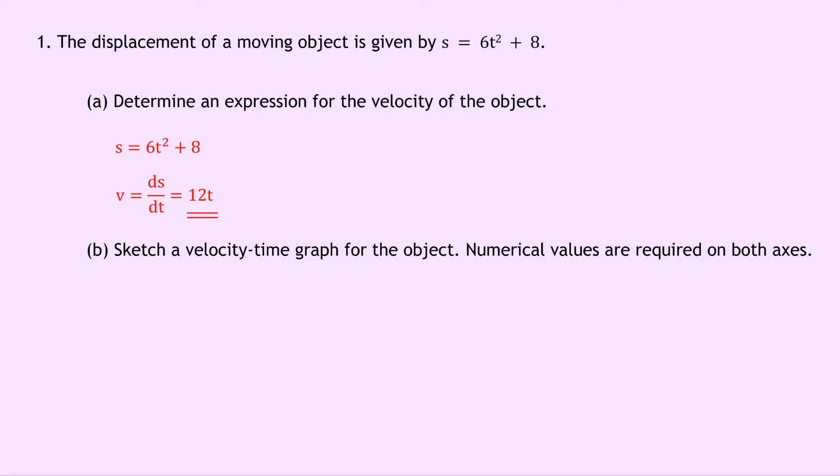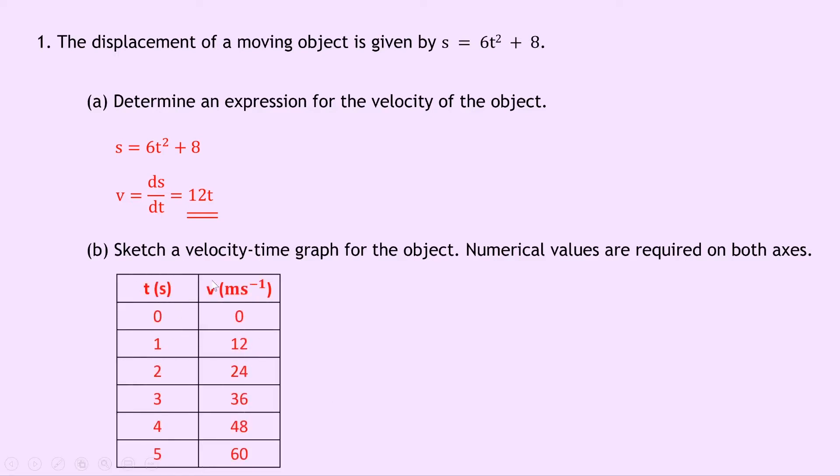Part B says to sketch a velocity time graph for the object. Numerical values are required on both axes. Well from part A we have an expression for velocity in terms of time and we're going to use that to come up with a table with values of velocity and time. And that'll help us sketch a graph. So if we do that then our table might look something like this. So we have time in seconds and velocity in meters per second. Now I'll just explain how we got these values. So we've chosen a range of time going from 0 to 5 seconds. So if you plug in all of these values of time into our expression for velocity then we get these values here.